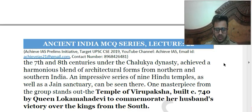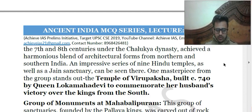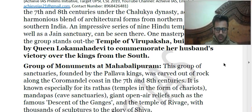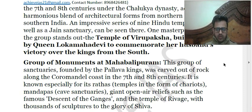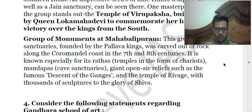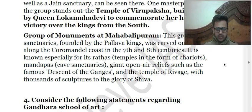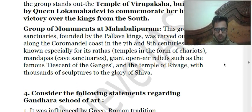The Patadakal group of monuments is associated with the Chalukyan dynasty and the Virupaksha temple was made by Lokamahadevi. The Mahabalipuram group of monuments was built by the Pallava kings of Kanchi — they were carved out of rock along the Coromandel coast in the 7th and 8th centuries in the form of pagodas, Rathas (temples in the form of chariots), mandapas, cave sanctuaries, open-air reliefs such as the famous Descent of Ganges, and the temple of Ravage with thousands of sculptures to the glory of Shiva.